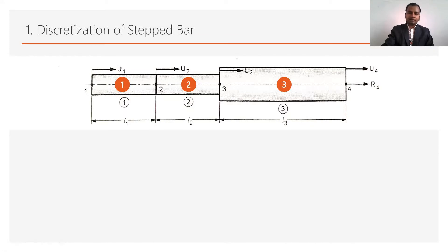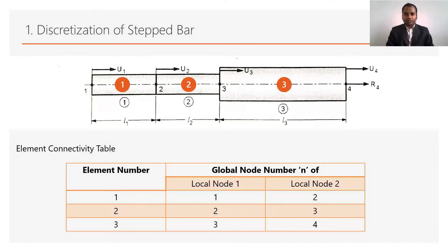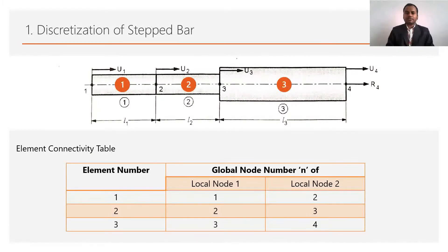After discretization, we write the element connectivity table. The element number is listed along with the global node numbers. Since each element in 1D bar element has 2 nodes only, the connectivity is: element 1 → nodes 1 and 2; element 2 → nodes 2 and 3; element 3 → nodes 3 and 4.